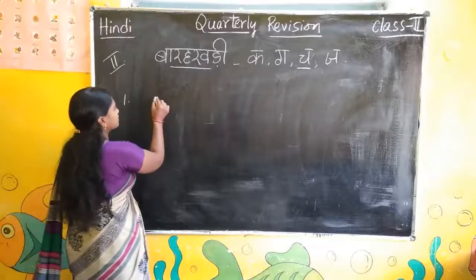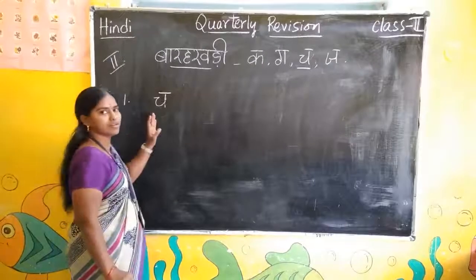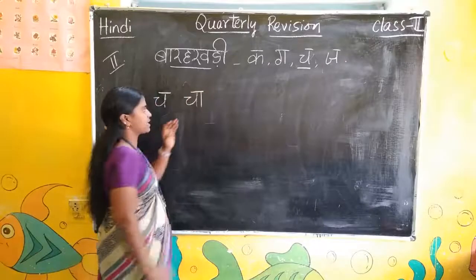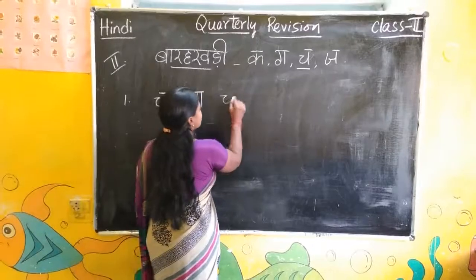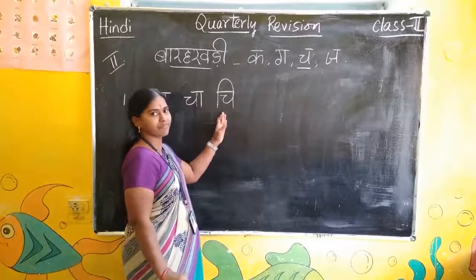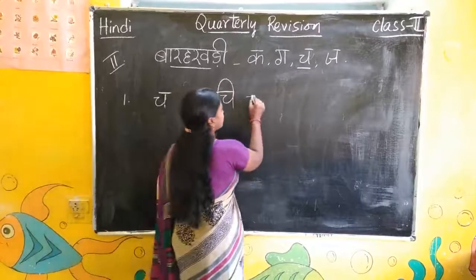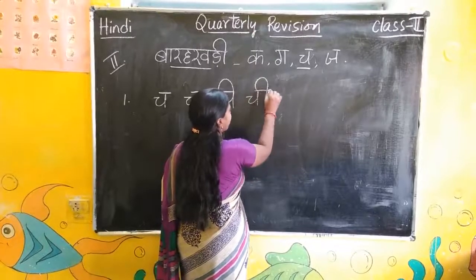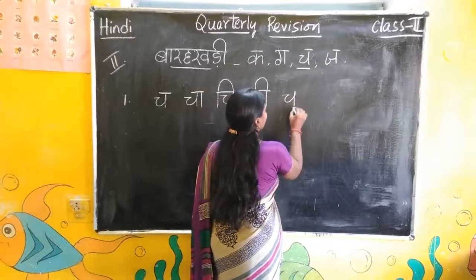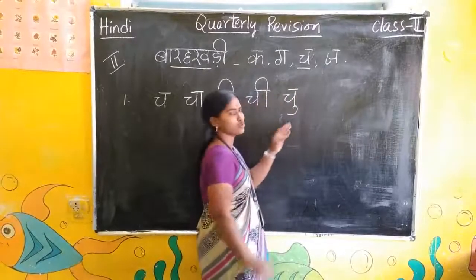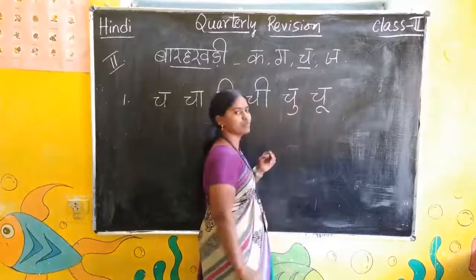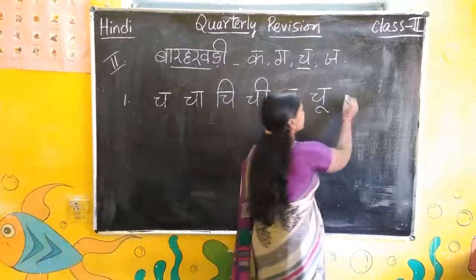Okay children, Cha. You have to keep Aaki Matra. Next, Cha with Chodi Eaki Matra — Chi. Next, Cha with Badi Eaki Matra — Chi. Uaki Matra — Chu. Badi Uaki Matra — Chu.